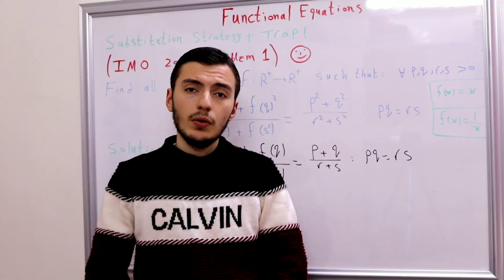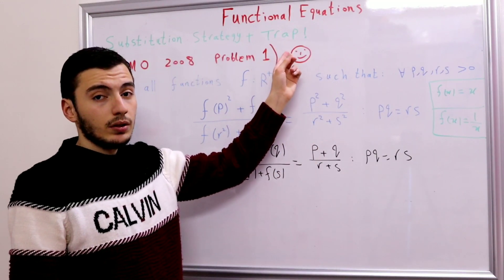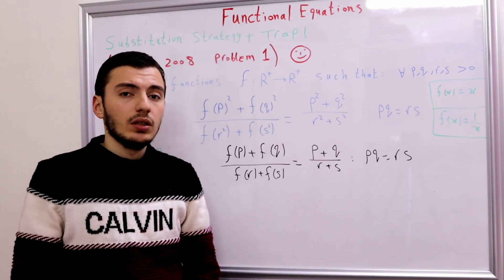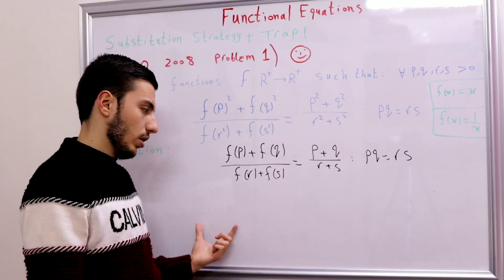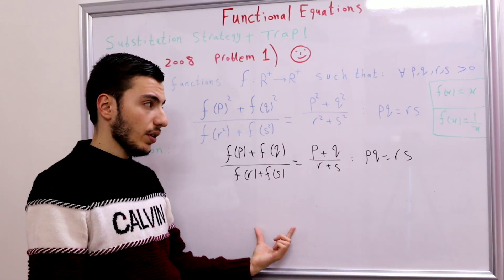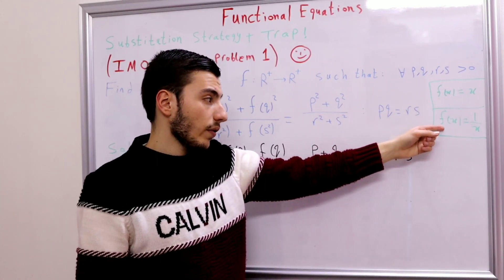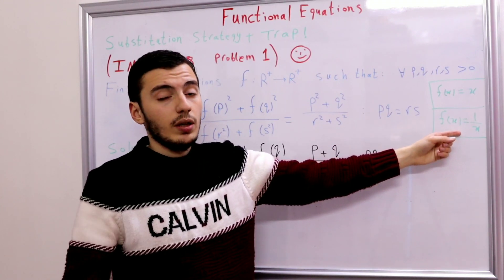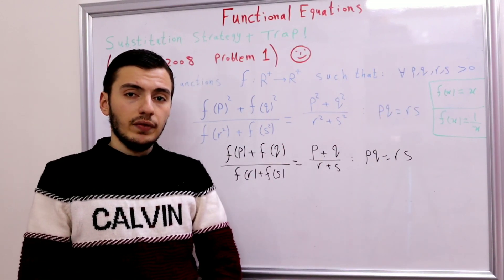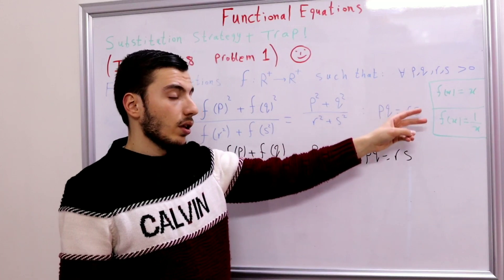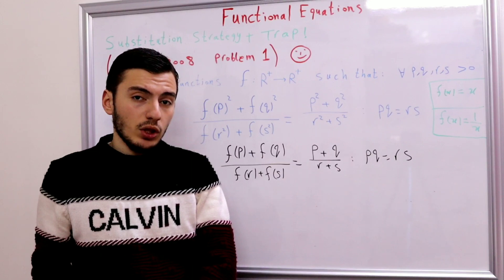Wait — we're not done yet! Didn't we mention a trap earlier? The trap is this: from the fact that f(x) = x or f(x) = 1/x for each x, we cannot immediately conclude that f(x) = x for ALL real numbers or f(x) = 1/x for ALL real numbers. We must rule out mixed functions.